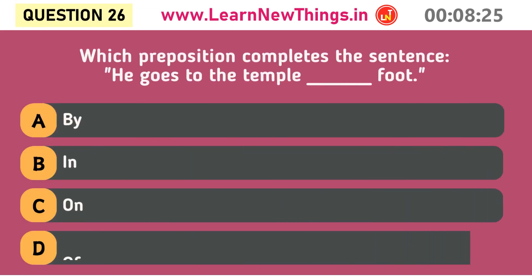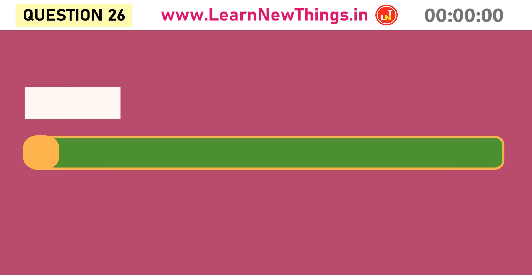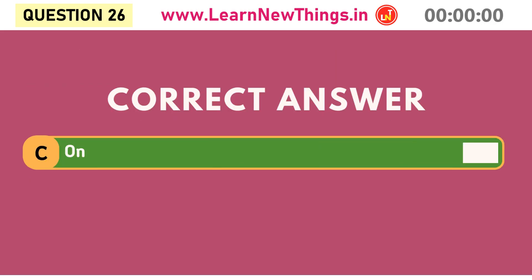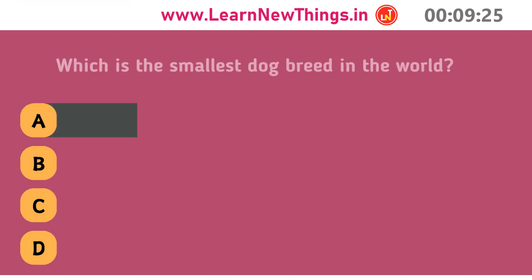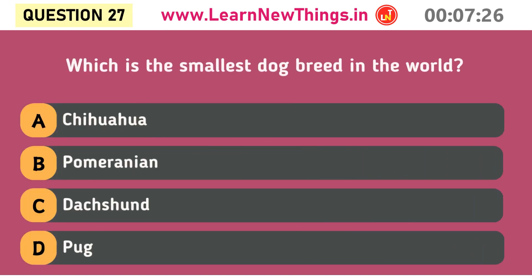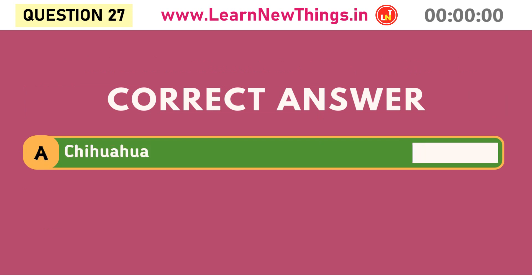Which preposition completes the sentence: 'He goes to the temple ___ foot'? On. Which is the smallest dog breed in the world? Chihuahua.